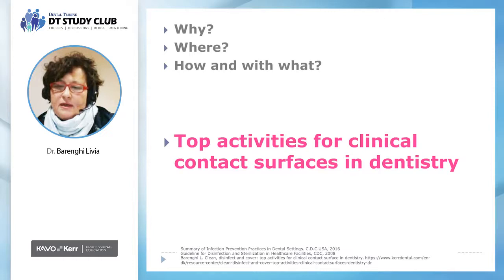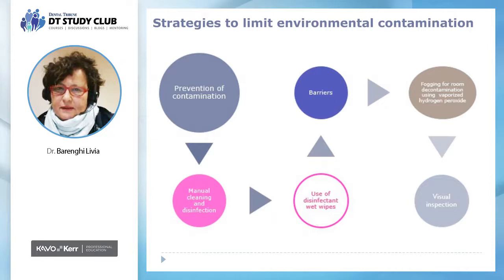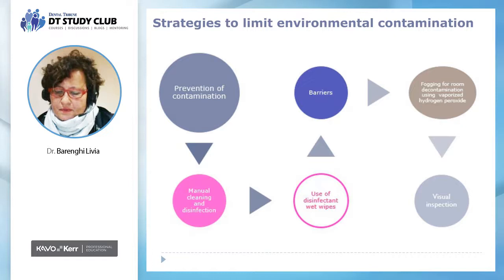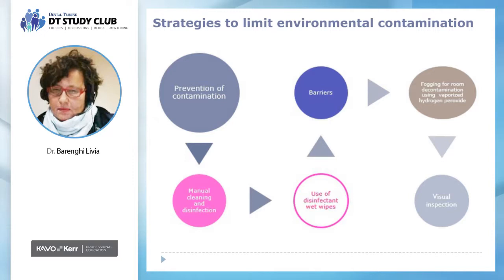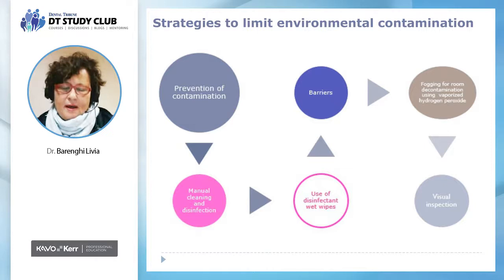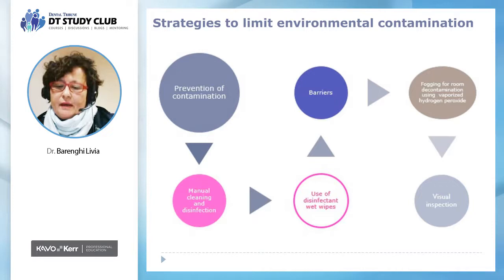Our lines of attack are to prevent contamination, then to clean, to disinfect mainly with single-use wet wipes, and to cover with barriers. These procedures are manual, so time and safety are a very relevant issue. Fogging for room decontamination using vaporized hydrogen peroxide is a semi-automatic safer but longer process. Visual inspection is also very important — that means sitting on the dental chair as a patient would, and looking around. We are standing during surface decontamination, so our perspective is different and we could miss something.